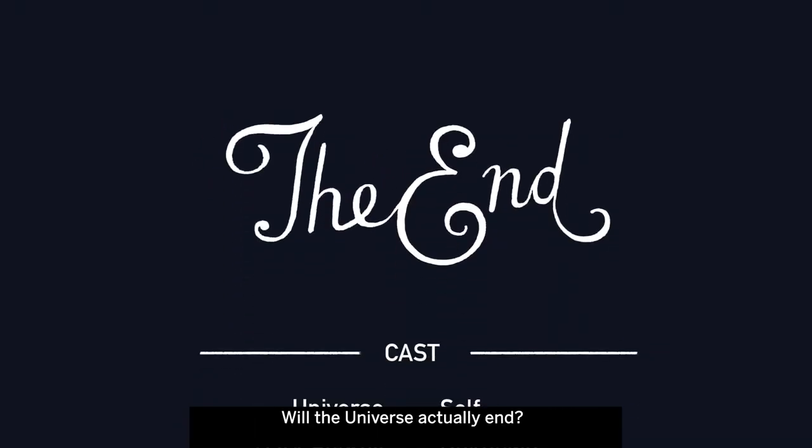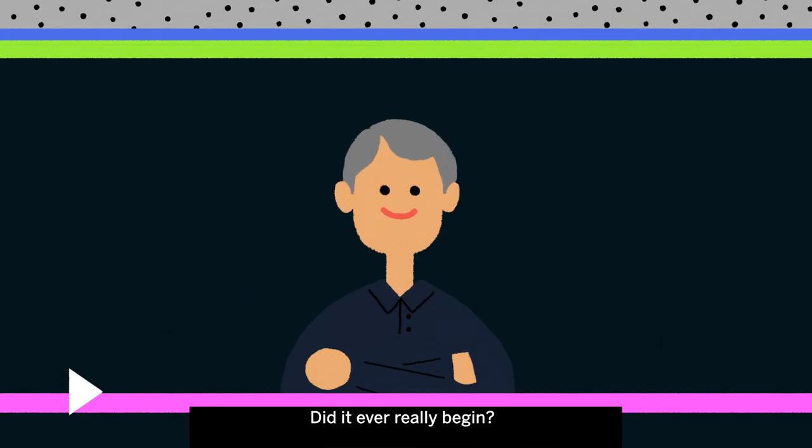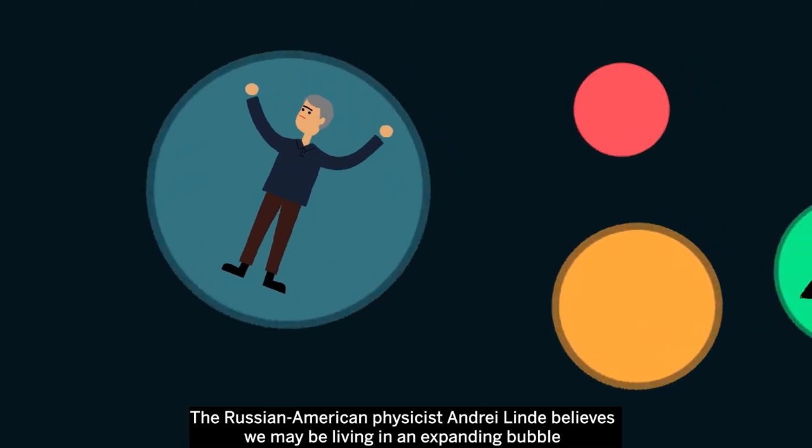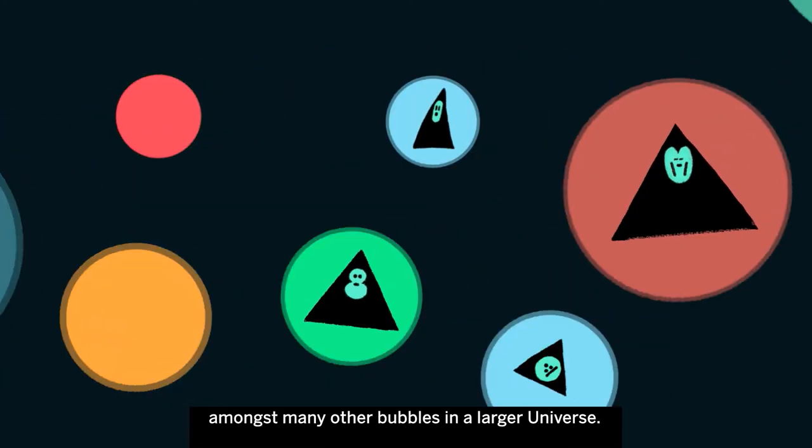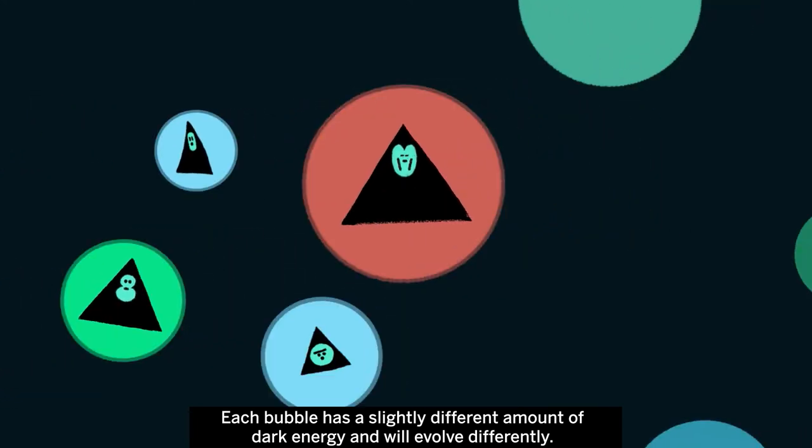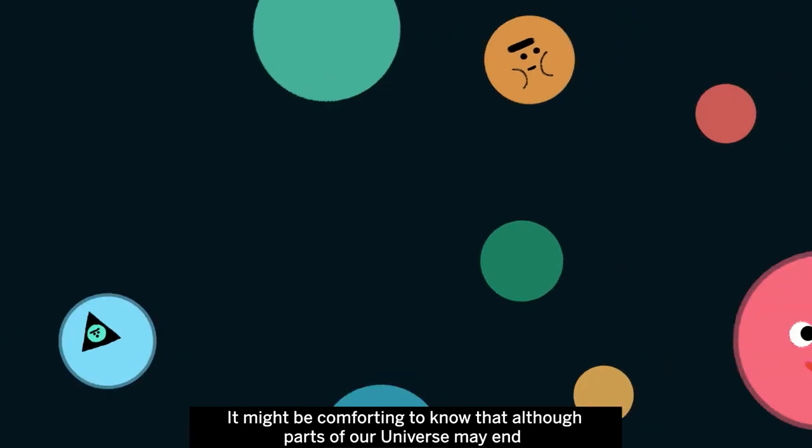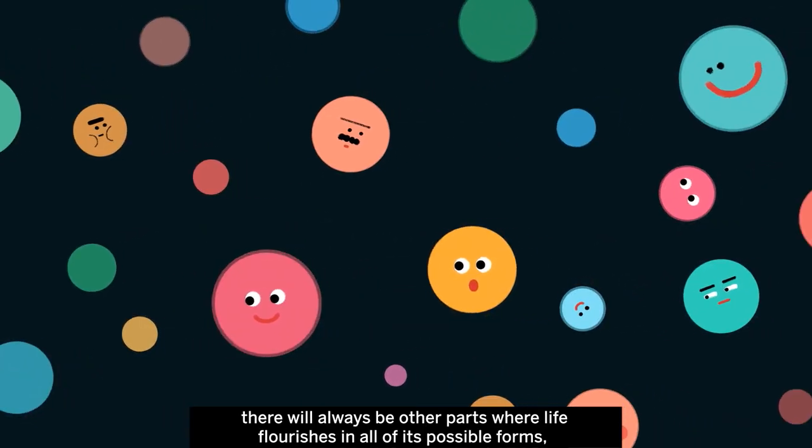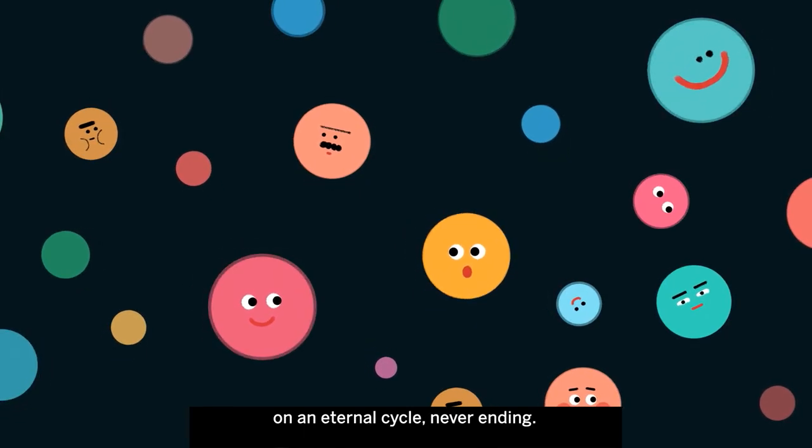Will the universe actually end? Did it ever really begin? The Russian-American physicist Andre Linde believes we may be living in an expanding bubble amongst many other bubbles in a larger universe. Each bubble has a slightly different amount of dark energy and will evolve differently. It might be comforting to know that although parts of our universe may end, there will always be other parts where life flourishes in all its possible forms, on an eternal cycle, never-ending.